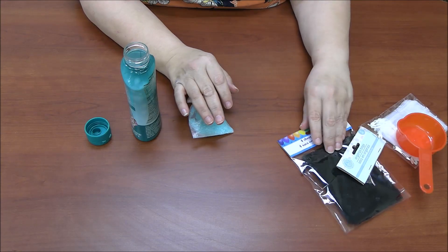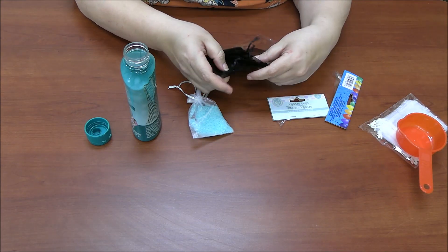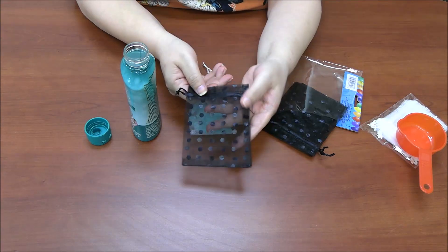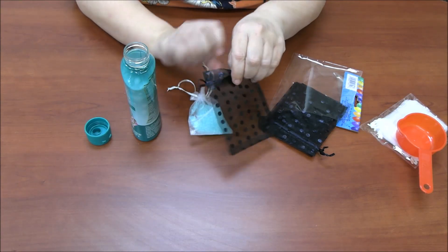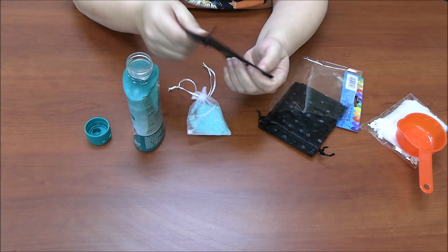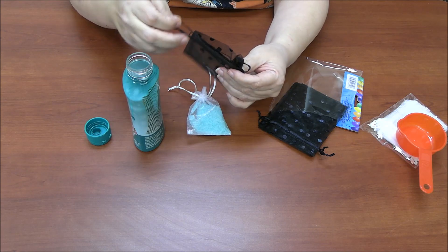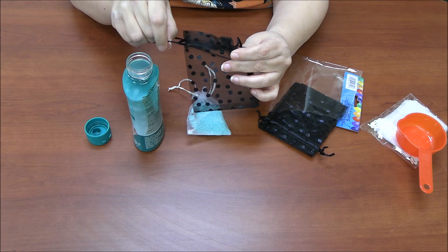So these are cute little sachet bags. This is the black one, super cute, has polka dots. And then you would just pour it in there and then hang it in your car or your room, however you want to do it.